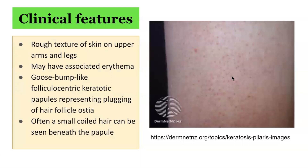The clinical features of keratosis pilaris include rough texture of skin on the upper arms and legs. However, it can also present on other parts of the body, including the back, the buttocks, and behind the legs. It may have associated erythema, particularly around the follicles. It presents as goose bump-like folliculocentric keratotic papules, which represent plugging of the hair follicle ostia. Often, a small coiled hair can be found beneath the papule.